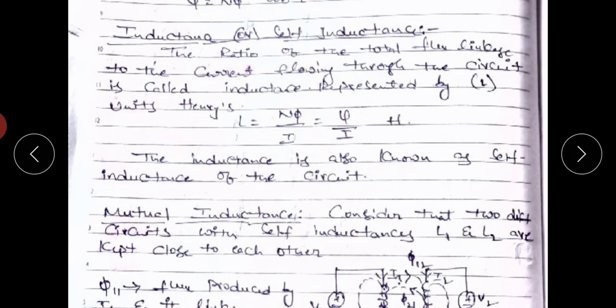First, inductance — it is also called self-inductance. It is defined as the ratio of the total flux linkages to the current flowing in the same circuit. It is represented by L, and its units are Henrys.